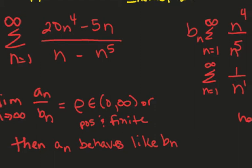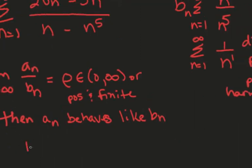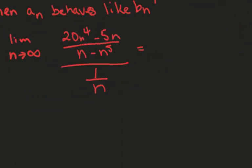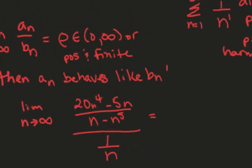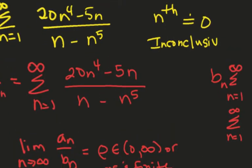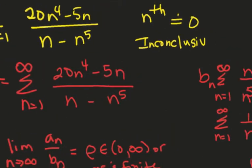So, let's take a look at that limit. We're going to have a limit as n approaches infinity of 20n to the 4th, minus 5n over n. Okay, quick recap. We're doing a series problem and had some technical difficulties.